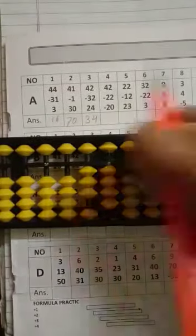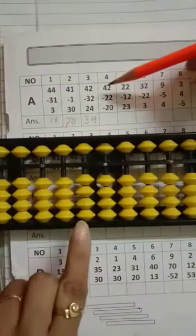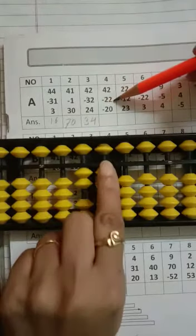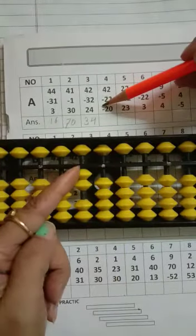So now, question number 4 will be 42, minus 20 and minus 2. Then again minus 20. Yes, your answer will be 0.